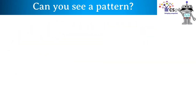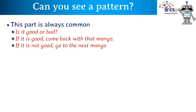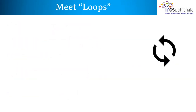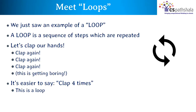Can you see a pattern? This part is always common: is it good or bad? If it is good, come back with that mango. If it is not good, go to the next mango. We can tell Arm Bot: repeat these steps for every mango until you find a good mango. This is a simpler algorithm. We were repeating the same set of instructions again and again — we just saw an example of a loop. A loop is a sequence of steps which are repeated.